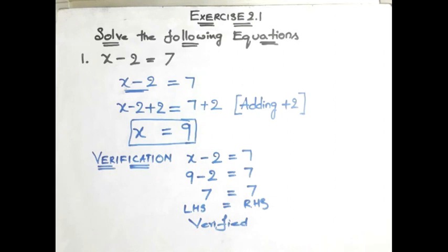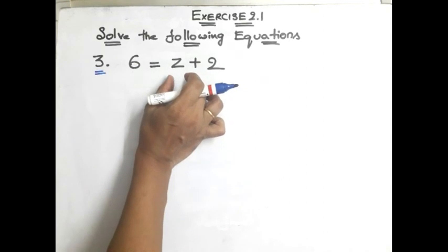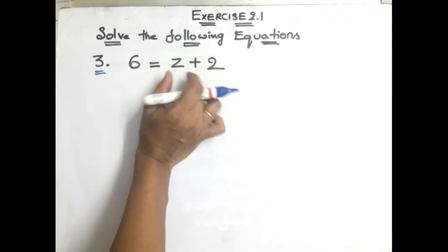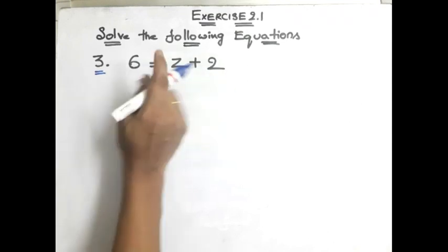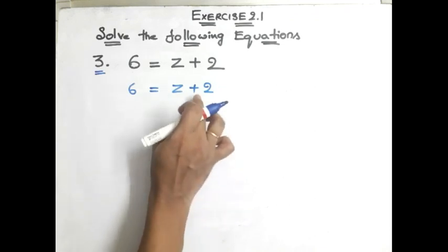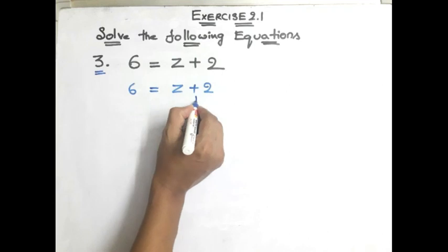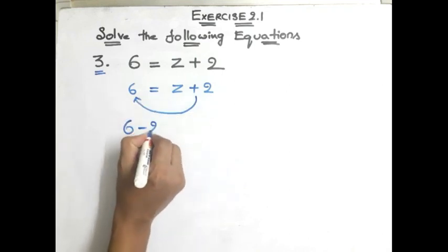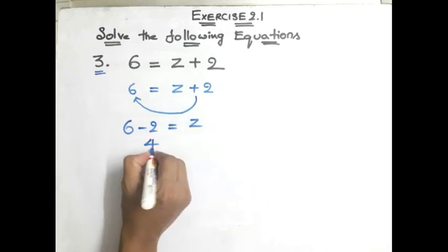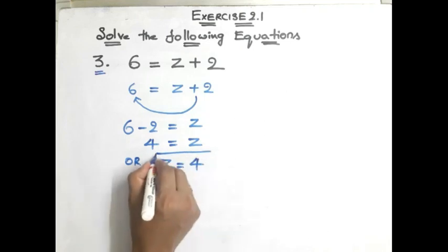Now I am going to use the method of transposing for question number 3: 6 is equal to z plus 2. Here the variable is on the RHS side — the variable can be at LHS or RHS. To isolate z, we transpose plus 2 to the other side, where it becomes minus 2. So 6 minus 2 is equal to z. 6 minus 2 is 4, so z is equal to 4 is the solution.